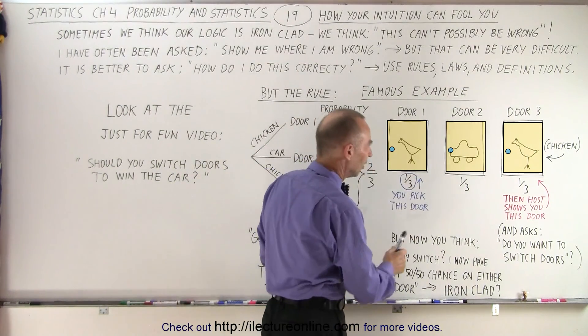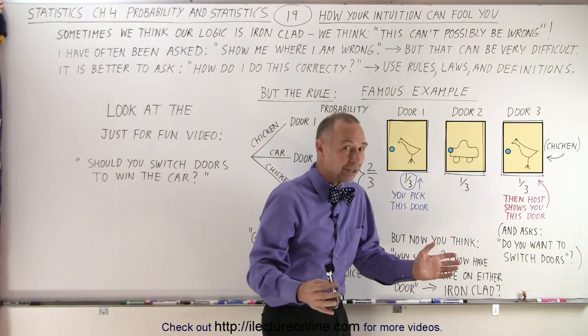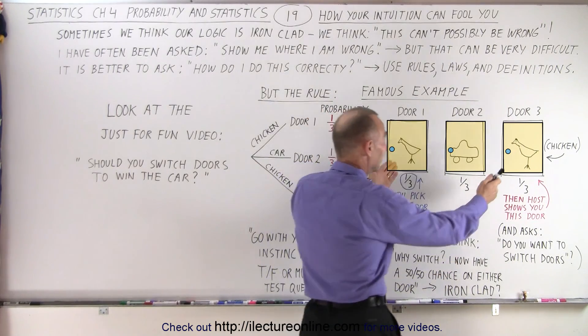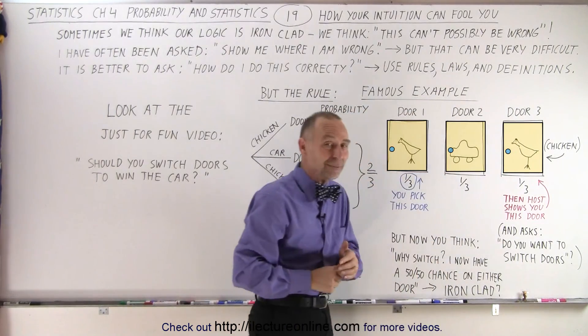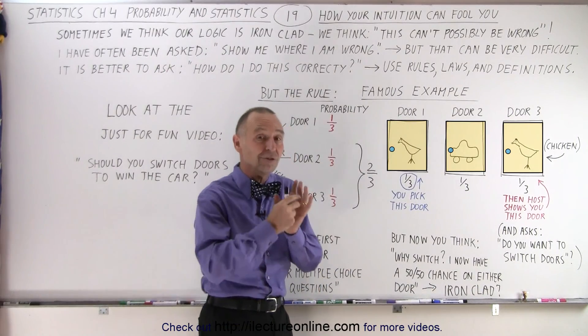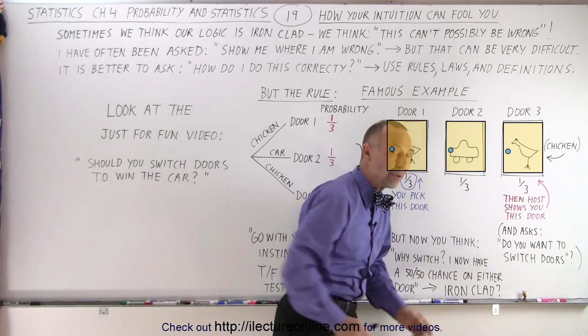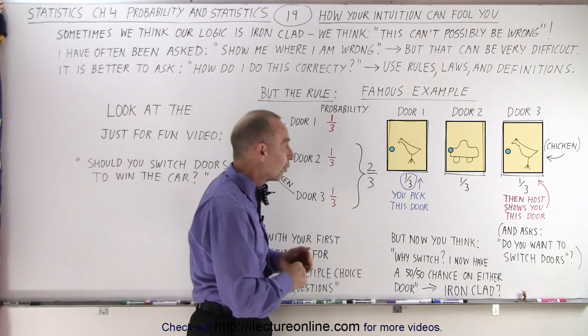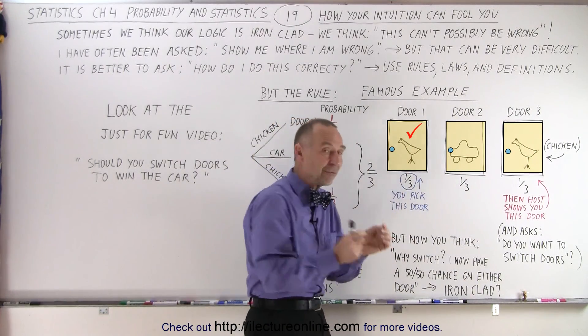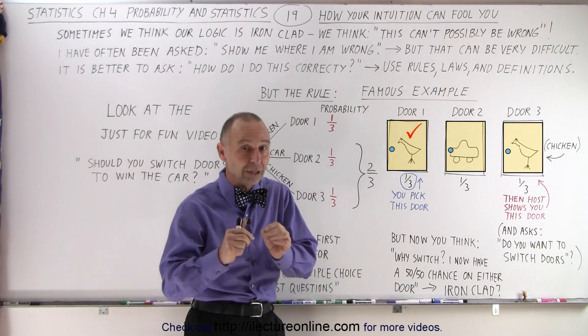So there were three doors. One of them had a wonderful prize like a car. The other one had kind of a very mediocre prize, for example like a chicken. But we do know that if there's three doors and you pick one, you have one third chance that the prize will be behind one of those three doors, and therefore when you pick a door you have one third chance you will actually win the prize.